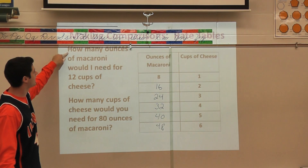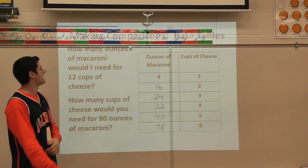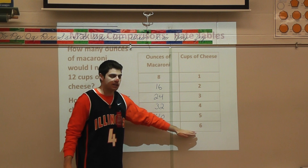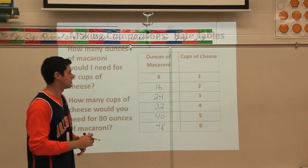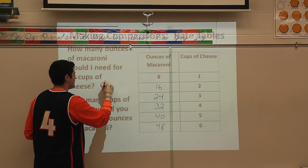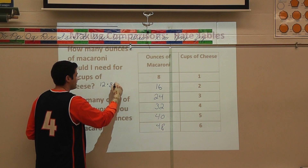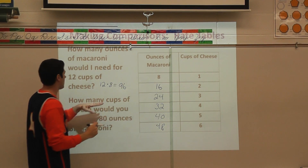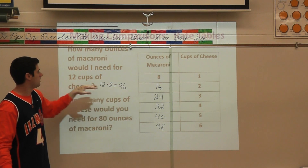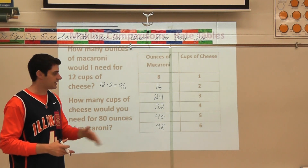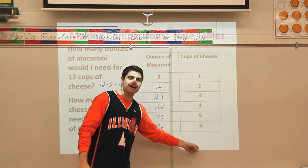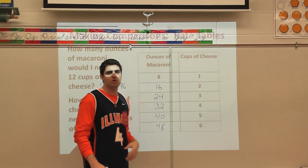Let's take a look at our first question: how many ounces of macaroni would I need for 12 cups of cheese? Imagine I drew out my chart and I now have 12 cups of cheese. I know I was multiplying by eight, so it's the same as taking 12 cups of cheese and multiplying by eight. I would need 96 ounces of macaroni. I just plugged 12 into the chart — I didn't have to extend it step by step. I just pretended like 12 was already there.